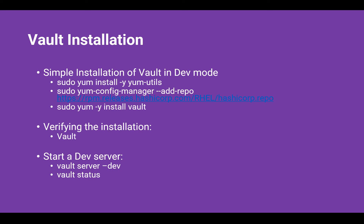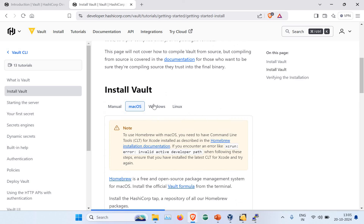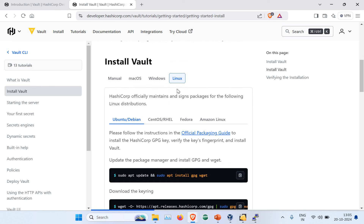I'm going to show a simple installation of Vault in dev mode on CentOS, running through commands to configure the repo, install Vault, verify the installation, start the Vault dev server, and check its status. I'll also show you the documentation for installing on Ubuntu, Fedora, or Windows. Note that we are not going into the enterprise or licensed version — this is a basic, non-production dev setup. HashiCorp has very good documentation and I'll link all the relevant links in the video description.